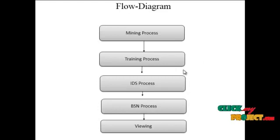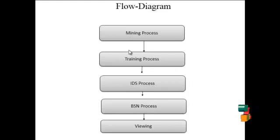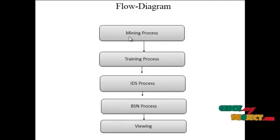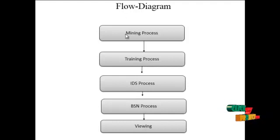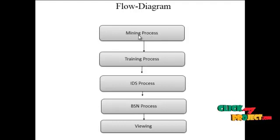This is our project flow diagram. In our project there are five important modules involved in the process. The first module is the mining process, the second is the training process, the third is the IDS process, the fourth is the BSN process, and the fifth is the viewing process. The first module, the mining process, is an important part of the knowledge data discovery process.